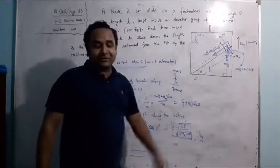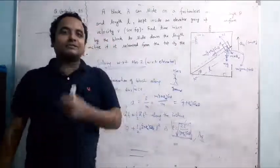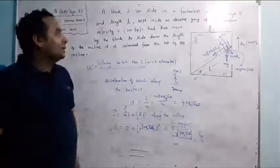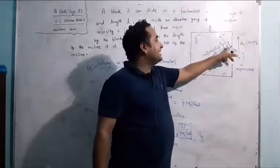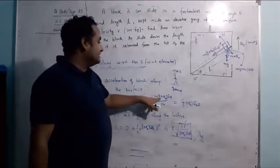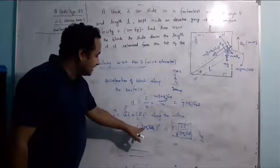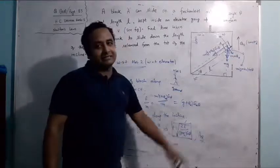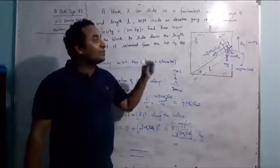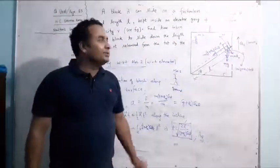Now if the elevator is going downward with acceleration A₀, the pseudo force acts upward (opposite to frame acceleration). So the net downward force component along incline becomes m(g − A₀) sin theta, giving acceleration = (g − A₀) sin theta. Time becomes t = √(2L / (g − A₀) sin theta). Note: A₀ must be less than g; if A₀ ≥ g, the normal force becomes zero and the block loses contact with the surface.